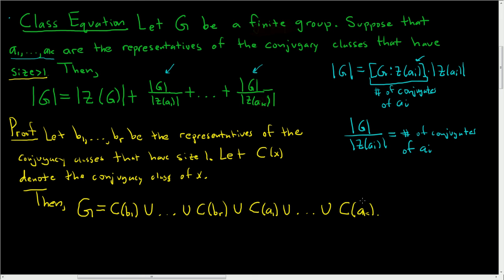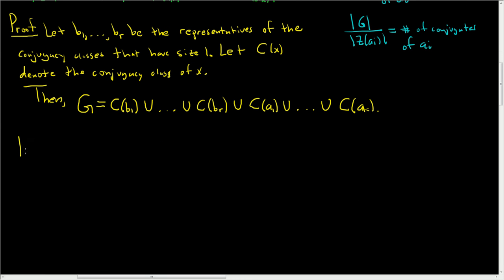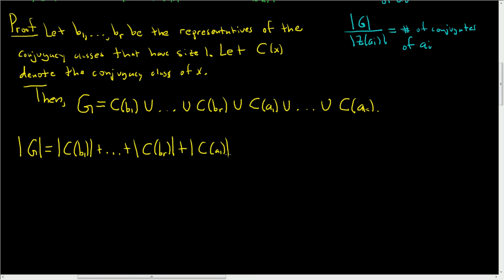Now we take the order of both sides of this equation. The order of G equals the sum of the orders, since the union is disjoint. So this is the order of the conjugacy class of B sub 1 plus dot dot dot plus the order of the conjugacy class of B sub R, plus the order of the conjugacy class of A sub 1 plus dot dot dot plus the order of the conjugacy class of A sub K.